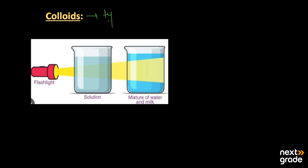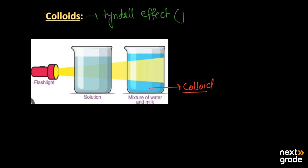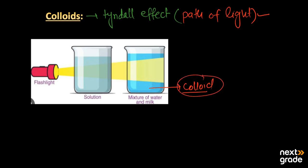Next, we have the property of colloids known as the Tyndall effect. The Tyndall effect is basically known as the scattering of light. When light is passed through the colloid, we can see the path of light. If the path of light is visible from a mixture, then the mixture may be a colloid or a suspension.